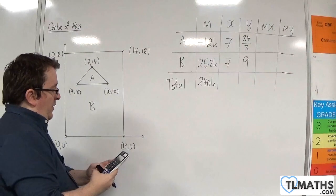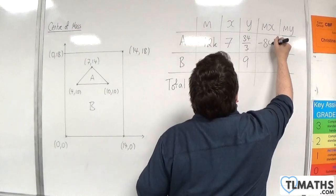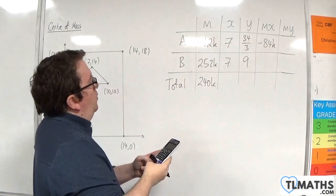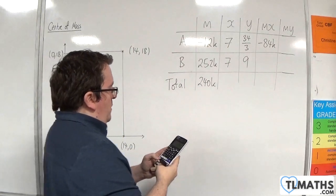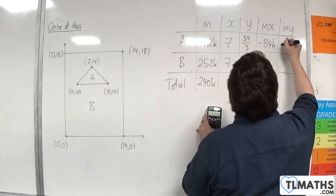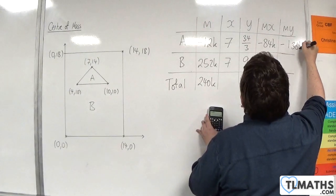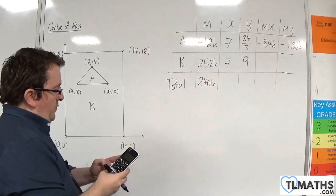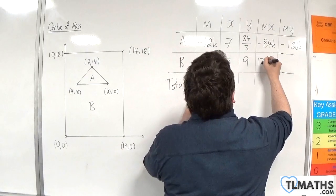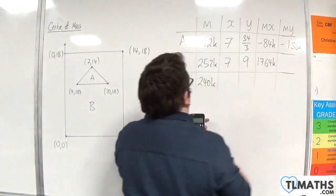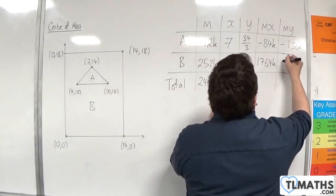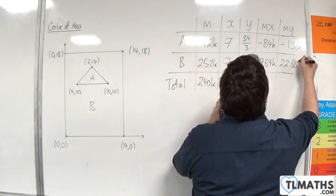So 12 times 7, that's 84, so minus 84k. Then we're going to have minus 12 times 34 over 3, so that's minus 136k. 252 times 7 is 1,764k, and 252 times 9 is 2,268k.